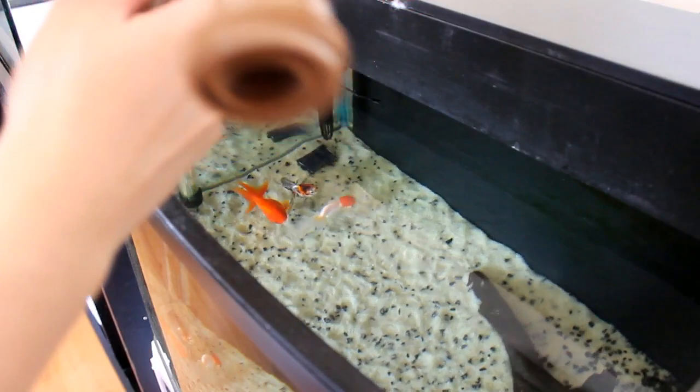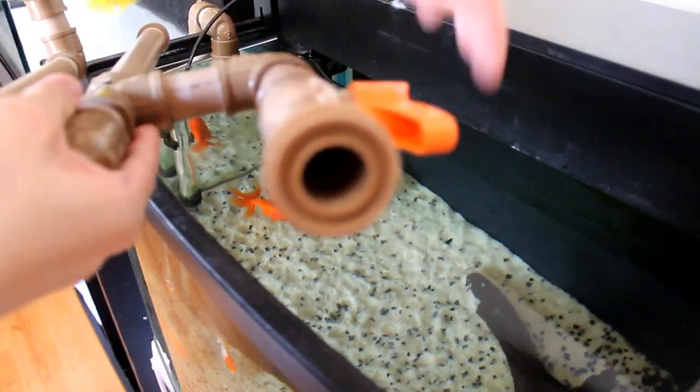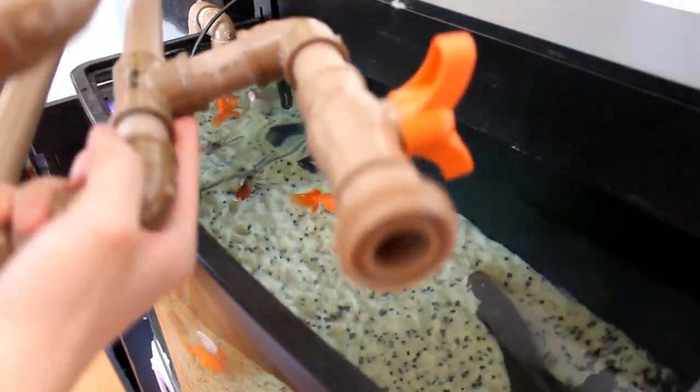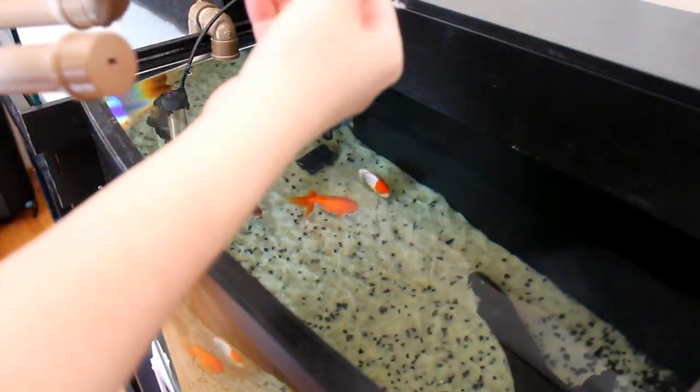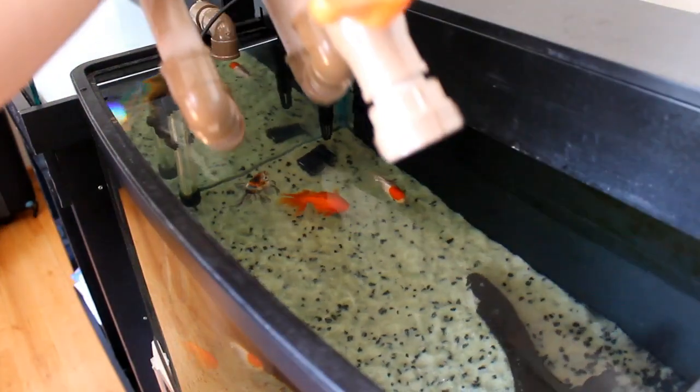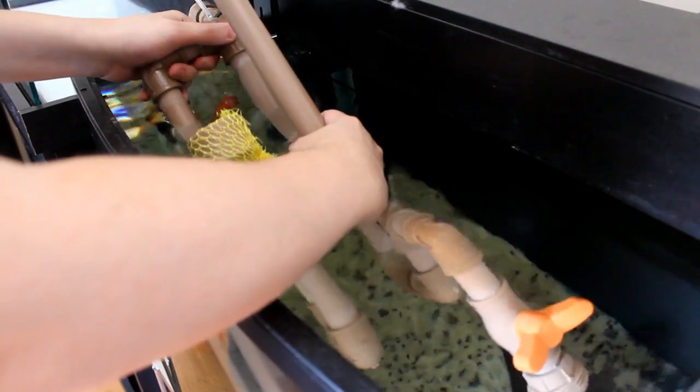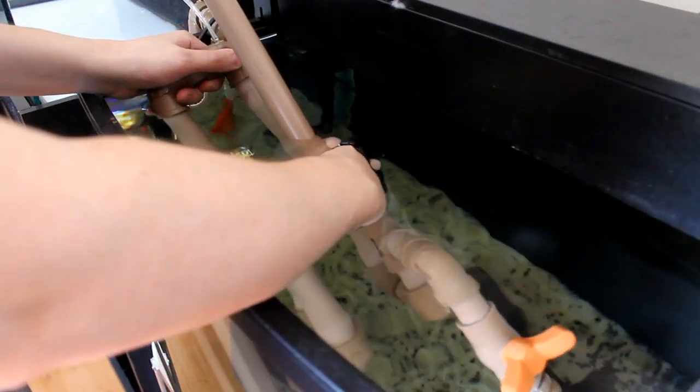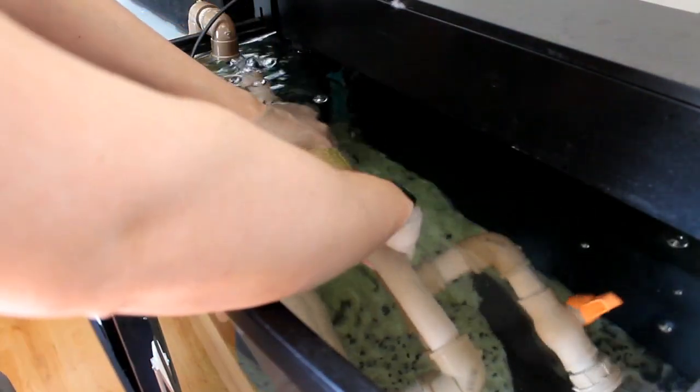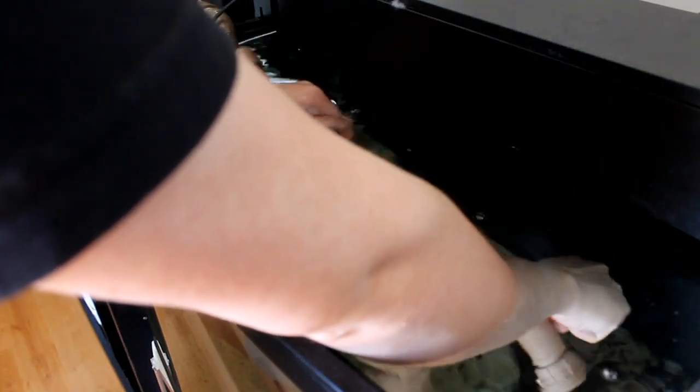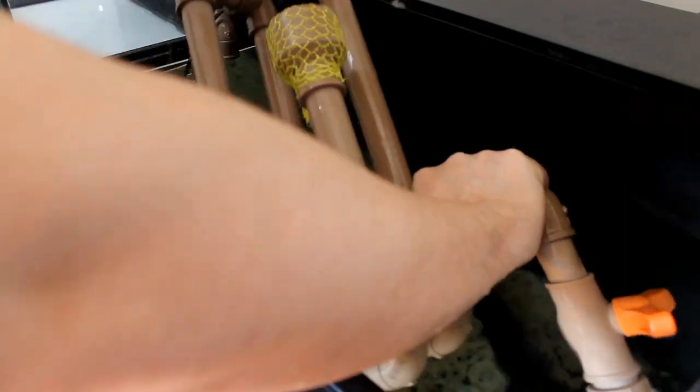Agora que estamos com tudo montado e preparado, vamos fazer o sistema de overflow funcionar, pessoal. Para fazer ele funcionar, é necessário colocar ele inteiro dentro do aquário com o registro fechado. A única coisa que deverá ficar para fora é aquela mangueirinha de pressão que também deve ser mantida fechada. Após colocar ele dentro do aquário, abra o registro por completo e também abra um pouco o registro da mangueira de ar. Após isso, espere alguns segundos e feche tanto o registro dos canos quanto o registro da mangueira.